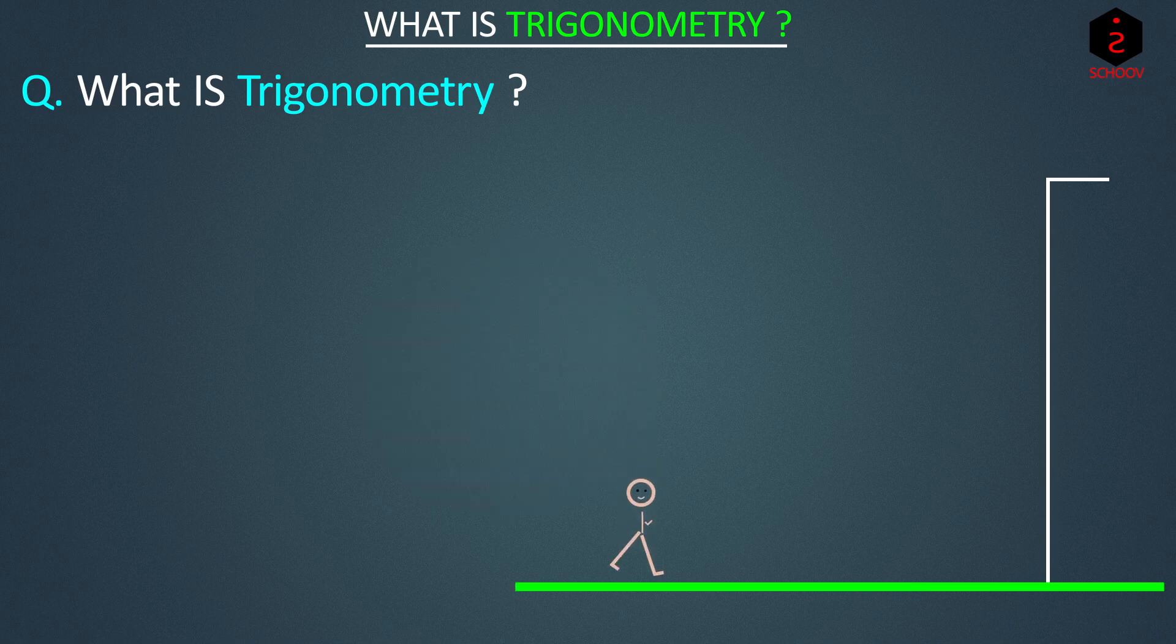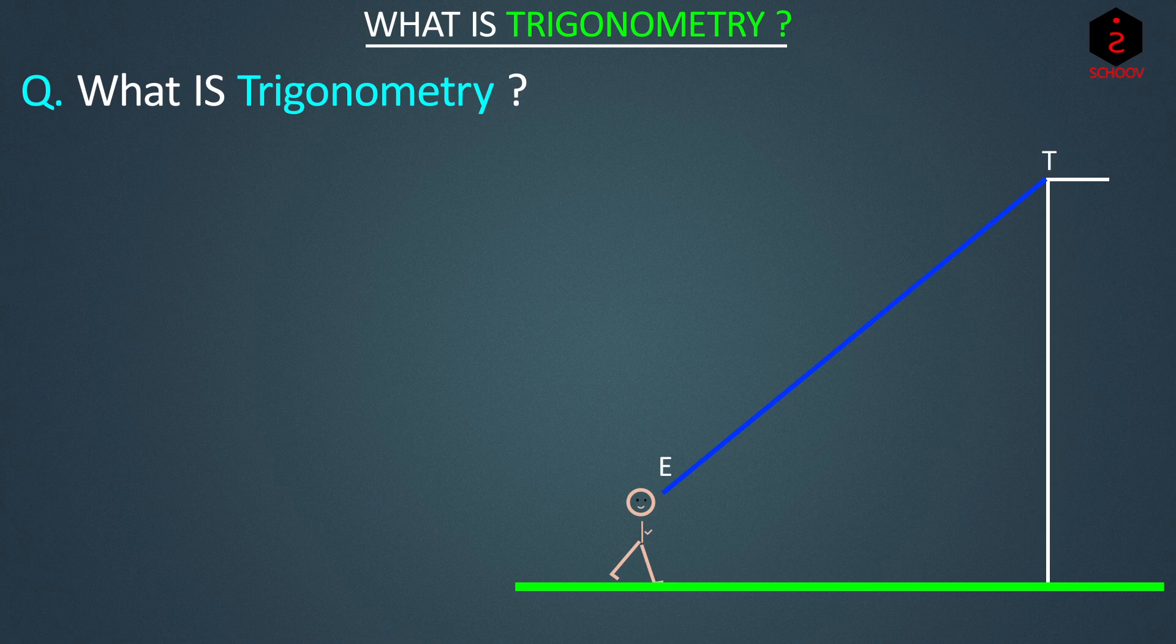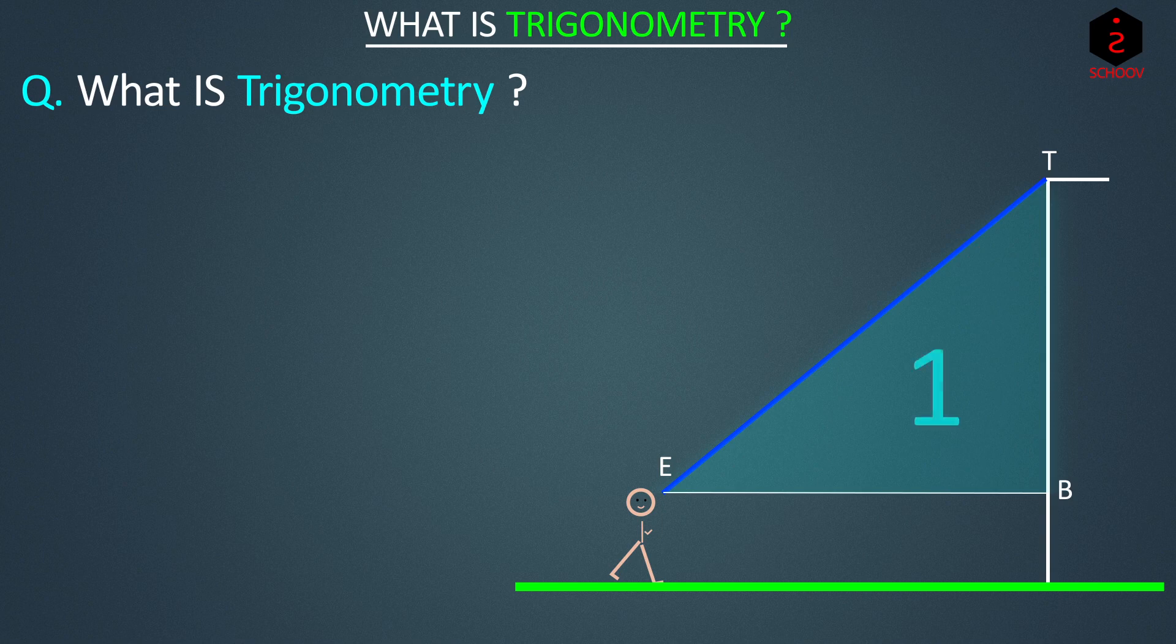Suppose I am standing in front of this tower. When I see the top of the tower, my line of sight is this horizontal line joining my eyes E and tower top D. When I look straight, my line of sight is this horizontal line which meets the tower at B. So this becomes a right-angled triangle one with B as 90 degrees.